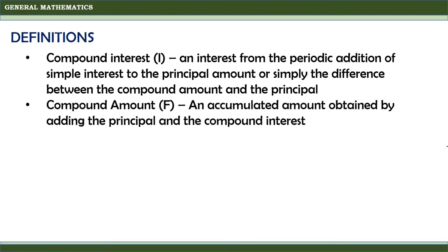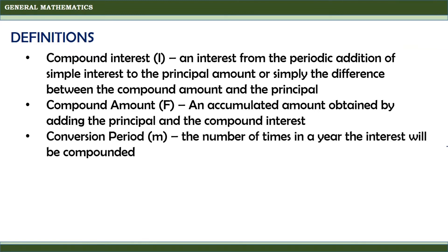Compound amount, represented by F, is the accumulated amount obtained by adding the principal and the compound interest. Conversion period, represented by M, is the number of times in a year the interest will be compounded.